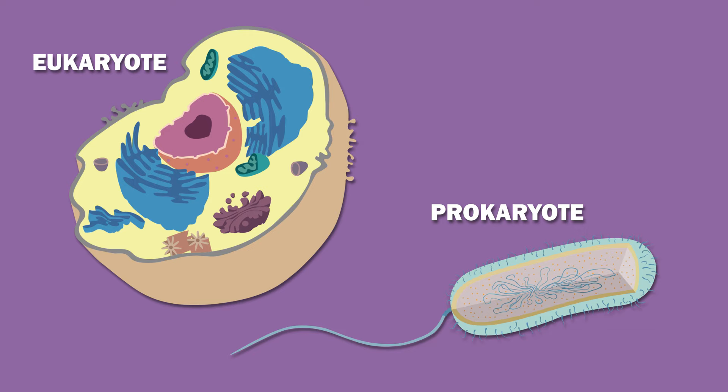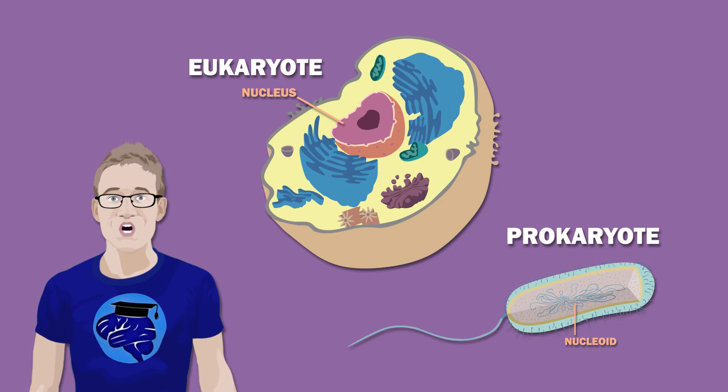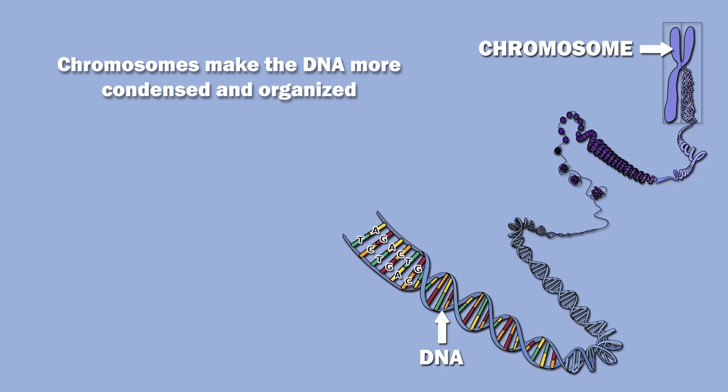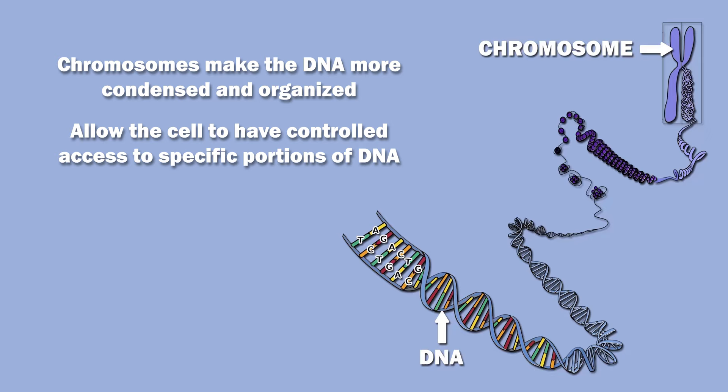In eukaryotes, DNA is found in the nucleus, but in prokaryotes it is found in the nucleoid. In both eukaryotes and prokaryotes, the DNA is packaged up into chromosomes, which are a combination of DNA and proteins. Chromosomes make the DNA more condensed and organized, and allow the cell to have controlled access to specific portions of DNA.